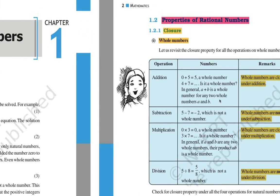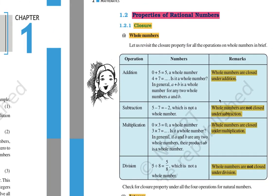With these numbers we have to study some properties. The main properties are: closure property, commutative property, associative property, and distributive property. We have to study these on the operations of addition, subtraction, multiplication, and division.